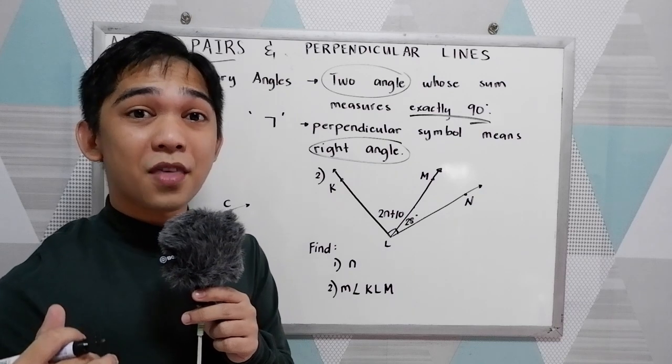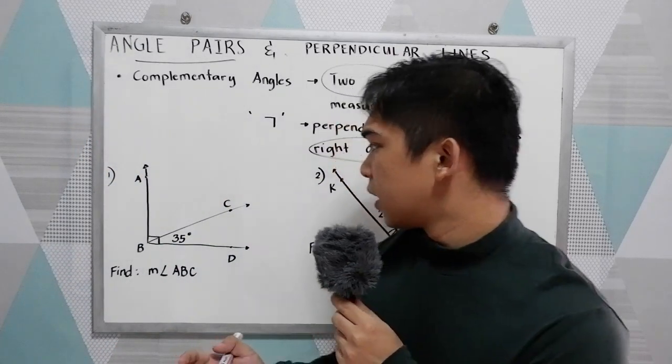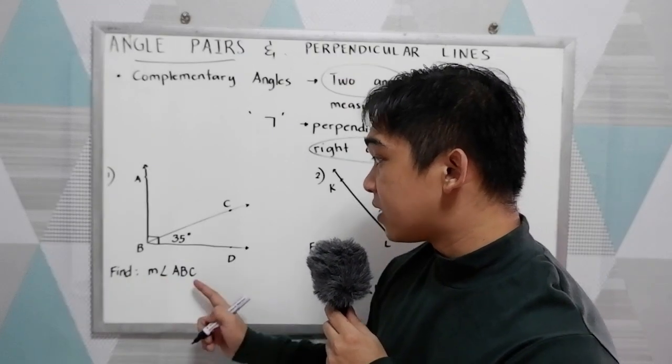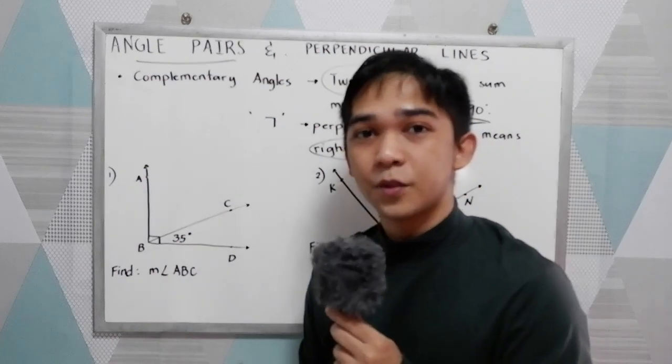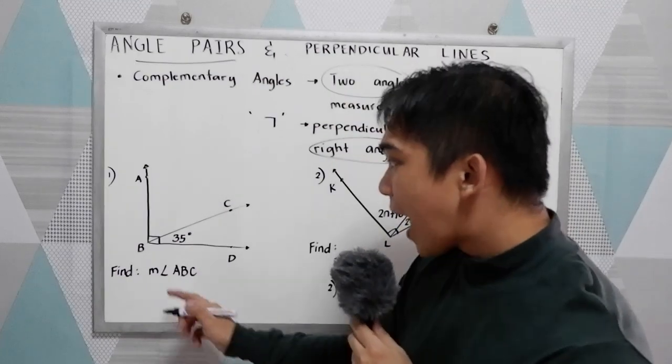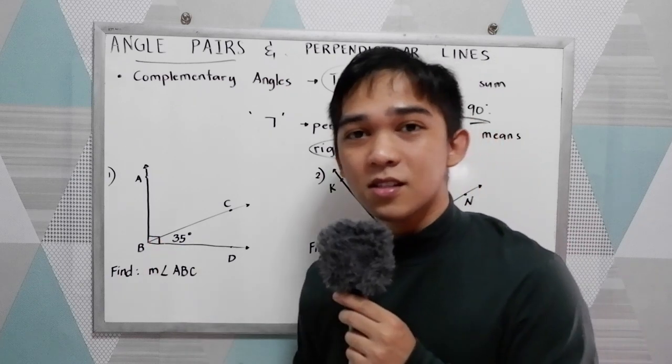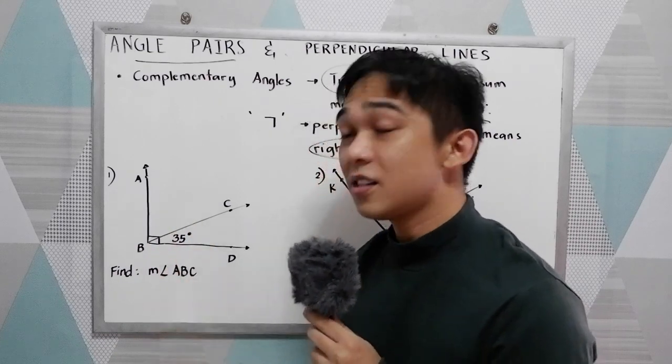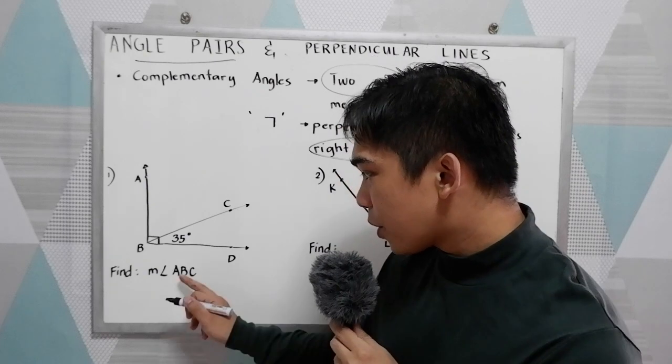To better understand complementary angles, let's have this illustrative example. Find measure angle ABC using this illustration. So we have a perpendicular line here.